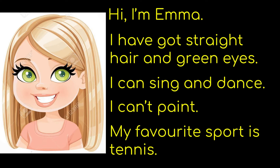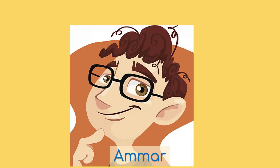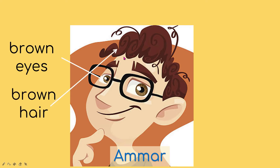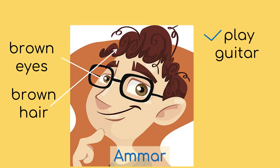What if you want to write about someone in your family? For example, I'm going to choose Amma, who is my brother. First, I'll describe what he looks like — I'll choose brown eyes. I'll also talk about his hair — brown hair. You can even choose curly hair or wearing spectacles, but this time I'm going to choose brown eyes and brown hair. Then I'll write about what he can do — he can play guitar.